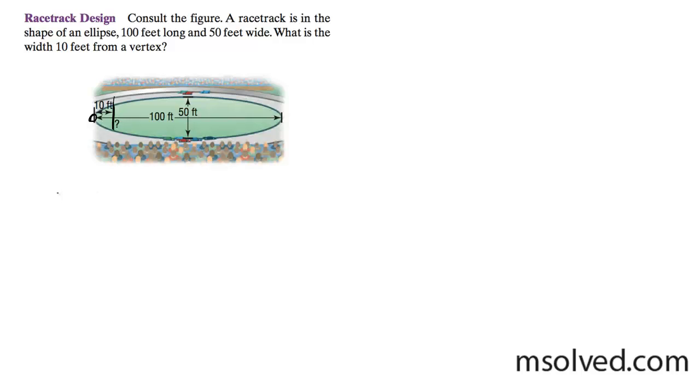So how we're going to do this here, set up the equation. So x squared, and the width of the track from the center which is going to be 50 squared, plus y squared over 25 squared is equal to 1.